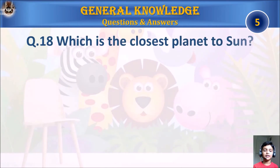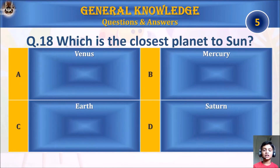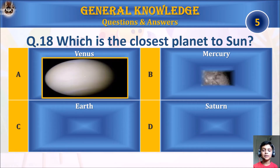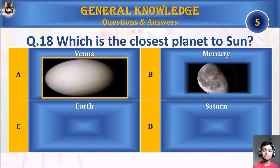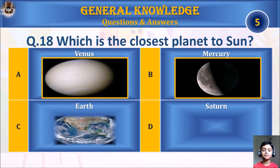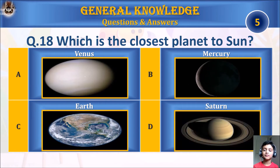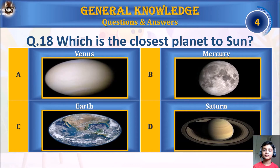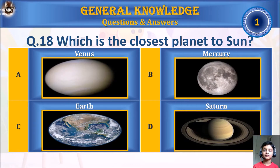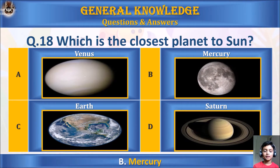Question 18: Which is the closest planet to the Sun? A. Venus, B. Mercury, C. Earth, or D. Saturn. Your time starts. The answer is B. Mercury.